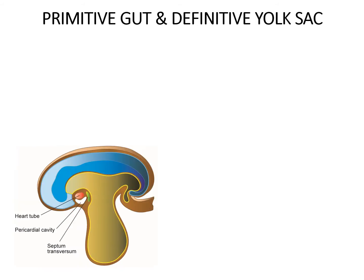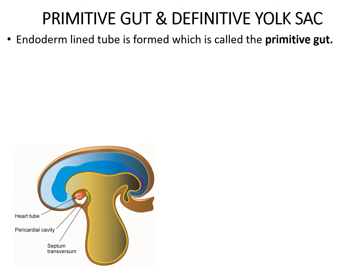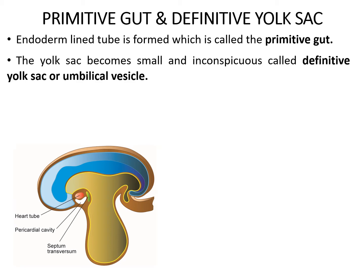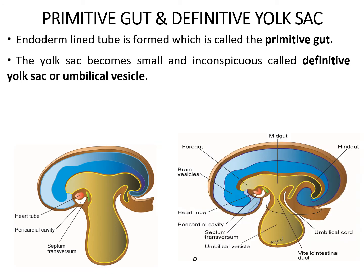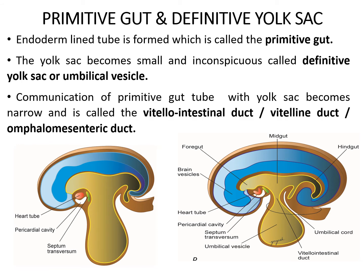The effects of folding result in the formation of two important structures: the primitive gut tube and the definitive yolk sac. As a result of folding, a large part of the yolk sac is incorporated into the embryo proper, forming an endoderm-lined tube known as the primitive gut. The extra-embryonic part of the yolk sac becomes small and inconspicuous, now called the definitive yolk sac or umbilical vesicle. The primitive gut and yolk sac communicate through a narrow structure known as the vitello-intestinal duct, also called the omphalomesenteric duct.